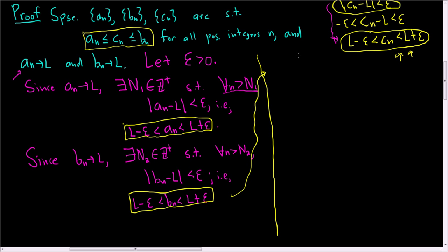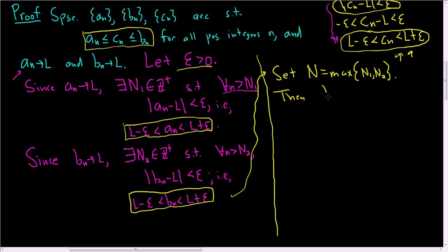We need to find a capital N. We have 'let epsilon be greater than zero,' and we need to find a positive integer N. We want both conditions to hold, so the natural thing to do is set capital N to be equal to the maximum of N_1 and N_2 — the biggest one. Then for all little n greater than capital N: if little n is bigger than capital N, it's certainly bigger than both N_1 and N_2. So both conditions hold.